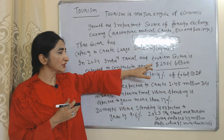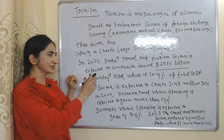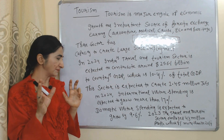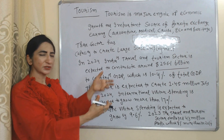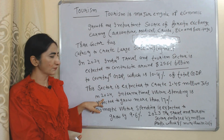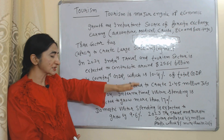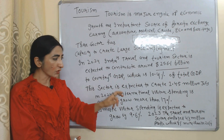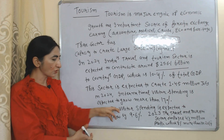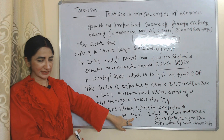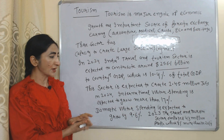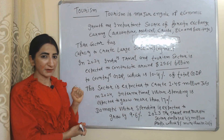In 2024, India's travel and tourism sector is expected to contribute around $256.1 billion to the country's GDP, which is 10.4% of total GDP. This sector is expected to create 2.45 million jobs in 2024. International visitor spending is expected to grow more than 17%, and domestic visitor spending is expected to grow 9.6%.